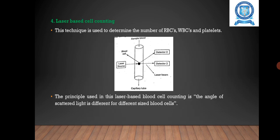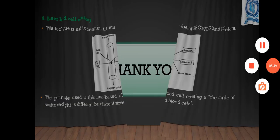Next is laser-based cell counting. It is used to determine the number of RBCs, WBCs, and platelets. This diagram shows the principle used in laser-based blood cell counting. The angle of scattered light is different for different sized blood cells. A lysing agent is used to destroy the RBCs so the WBC number can be determined. The hemoglobin concentration in the RBCs also can be measured by this method. Thank you.